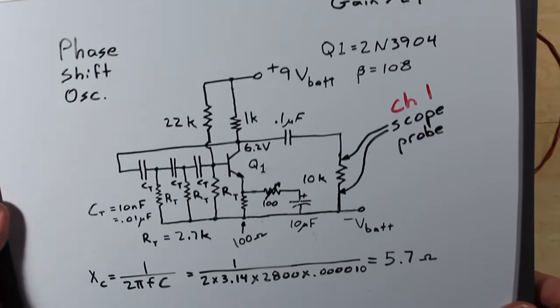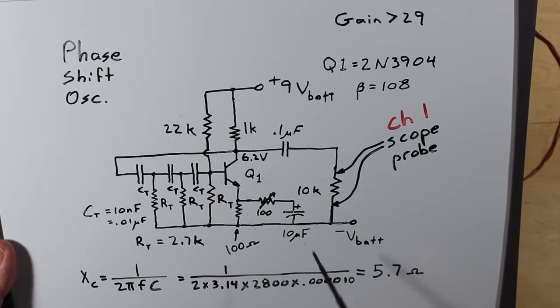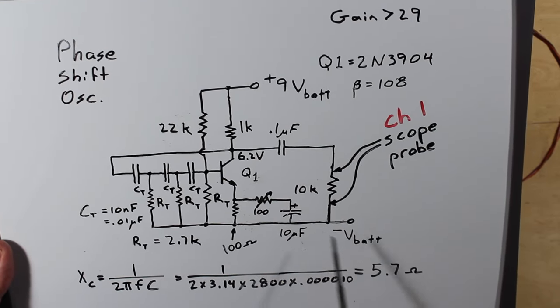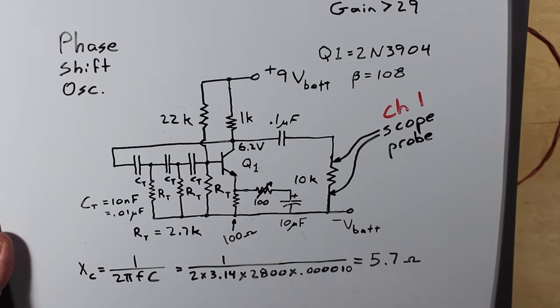And that 10 microfarad at 2800 hertz, which is roughly what this circuit runs at, this 10 microfarad capacitor is equivalent to about, we'll call it six ohms. That's what it is.